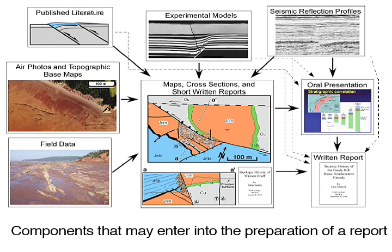Stratigraphic data must eventually be presented as a report to a state, business, or academic supervisory group, or to the editors of a printed journal or online publication. To help to do this, many conventions have been accepted. A basic one is the colors on a map or section that indicate the age of the rocks concerned.